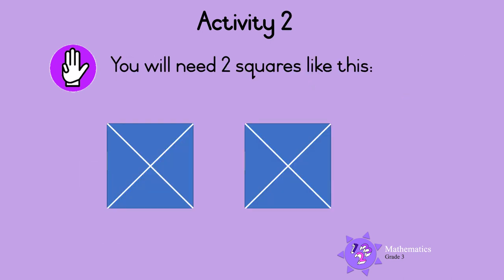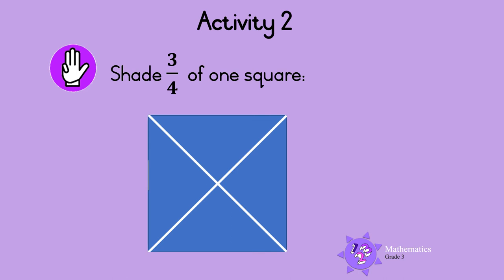Activity 2. You will need 2 squares like this. Each square is divided into 4 equal parts. Shade 3 quarters of 1 square. 3 quarters, or 3 fourths, means that 3 out of the 4 parts must be shaded. So shade 3 parts of this square: 1, 2, 3. That's it. Now 3 fourths of the square is shaded. Well done.